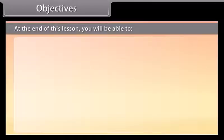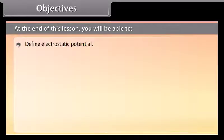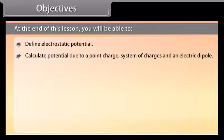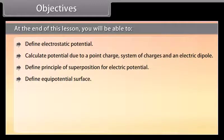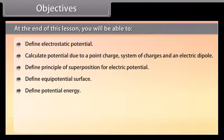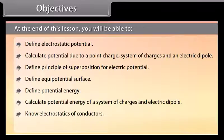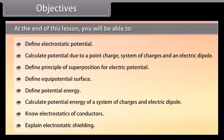At the end of this lesson, you'll be able to: define electrostatic potential; calculate potential due to a point charge, system of charges, and an electric dipole; define the principle of superposition for electric potential; define equipotential surface; define potential energy; calculate potential energy of a system of charges and an electrical dipole; know electrostatics of conductors; and explain electrostatic shielding.